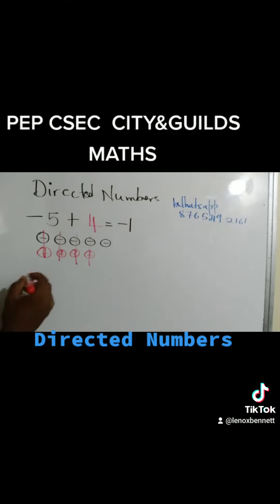So I want you guys to leave this one in the comment section. Let's say we have negative 5 plus 6. What would be the answer for this, right?